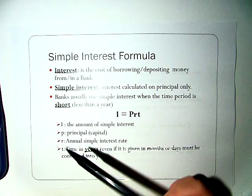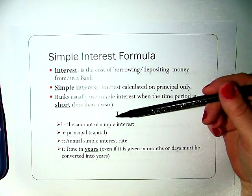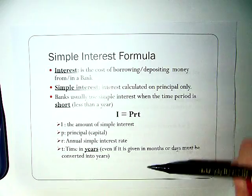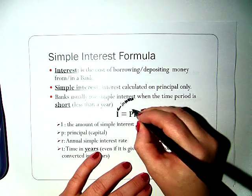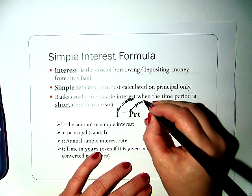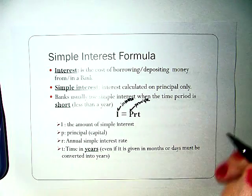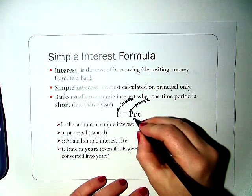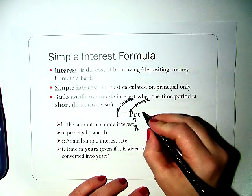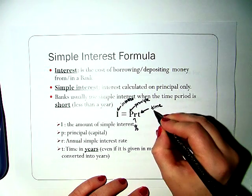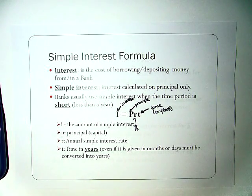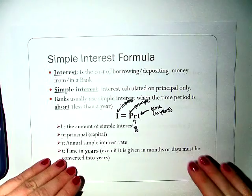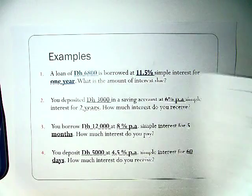Banks normally use simple interest when you are dealing with a very short period of time. The formula is I equals PRT. I is the amount of interest that you earn. P is the principal, the amount of money. R is the percentage rate. And T is always your time and it is in years. It's very important that we say in years because there will be problems that involve months or days, and you will need to divide by a certain number to convert into years.